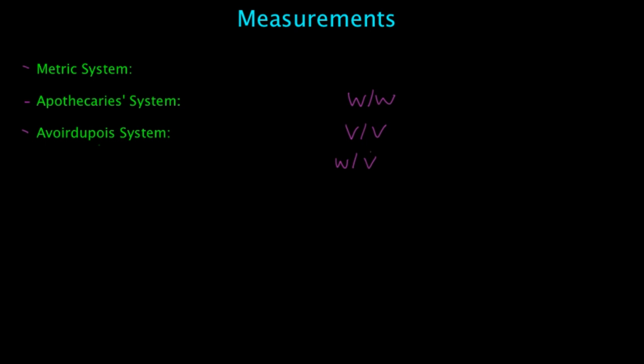We'll be dealing with weight when we deal with weight to weight, volume to volume, and weight to volume. It's always going to be grams to grams, milliliters to milliliters, and grams to milliliters. If it's not grams to milliliters, you want to make sure that whatever the measurement is, you're going to convert it to grams per mL, or mL per mL, or gram to gram.